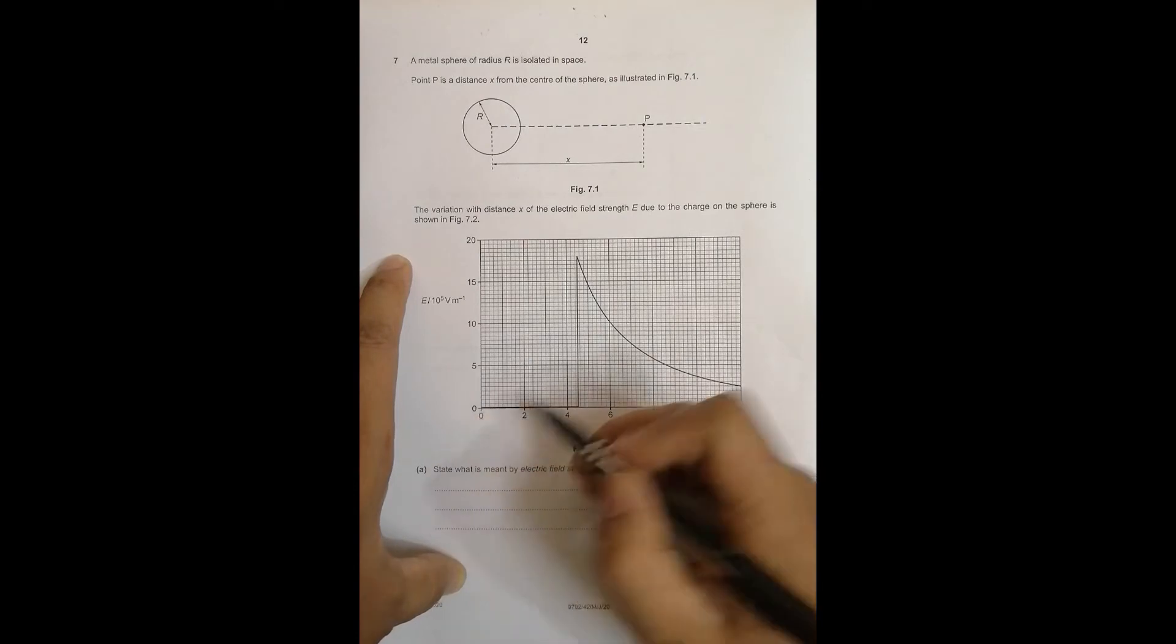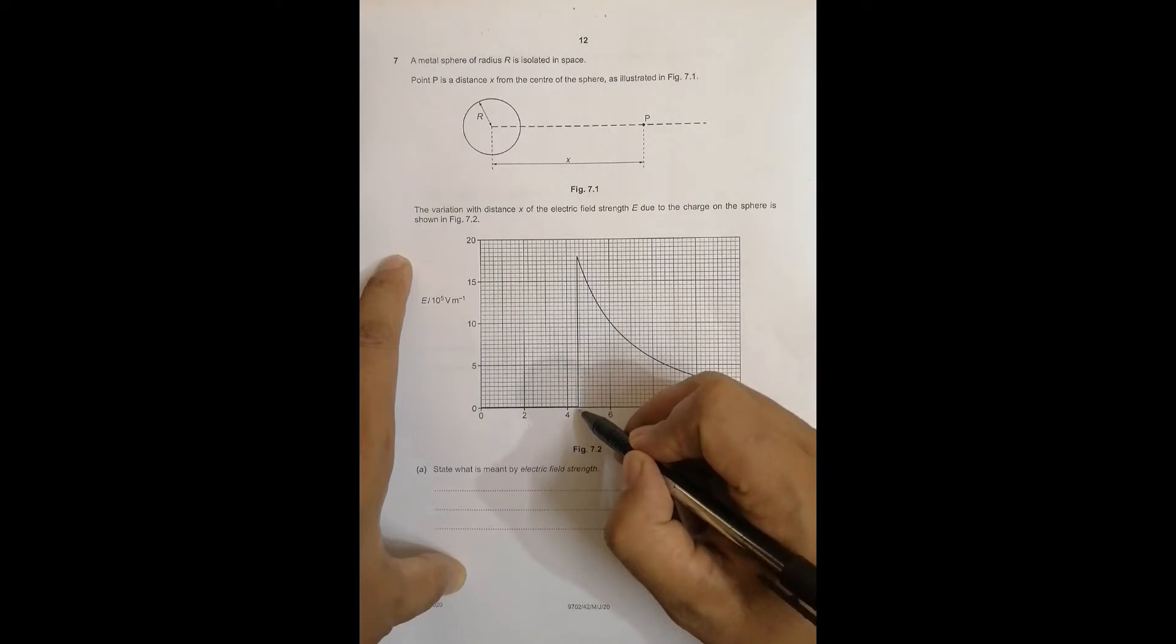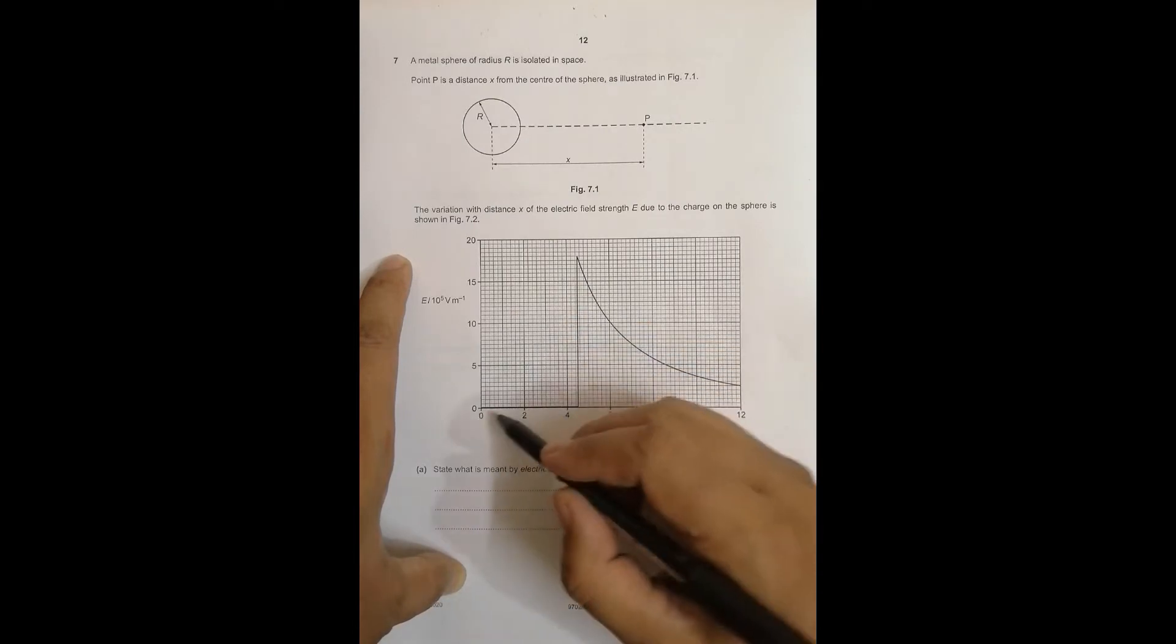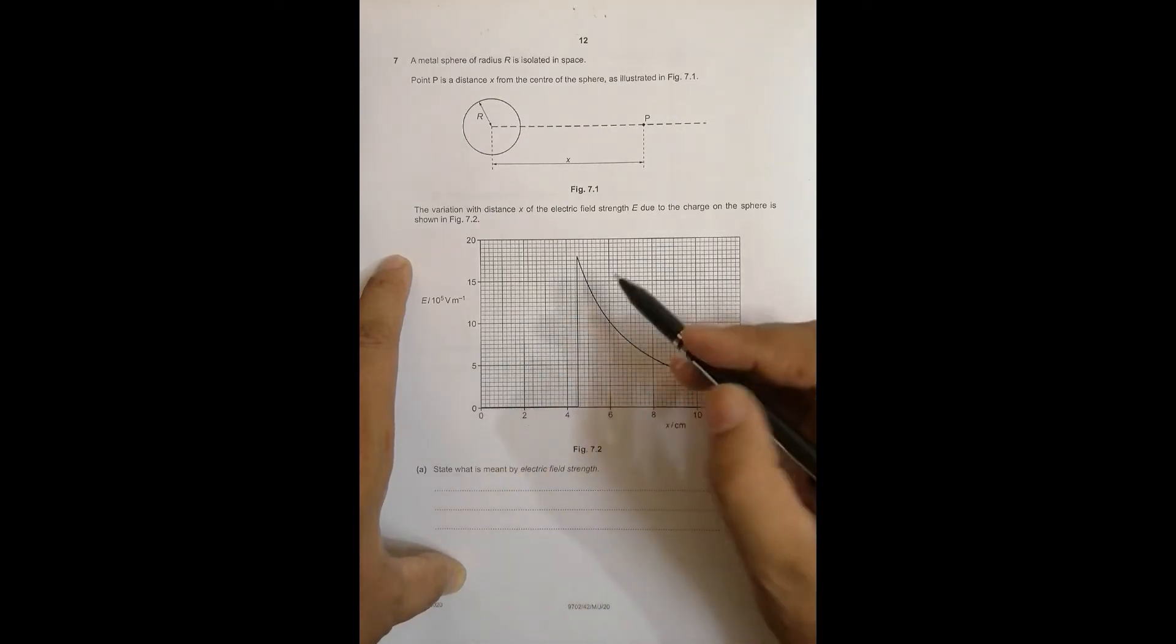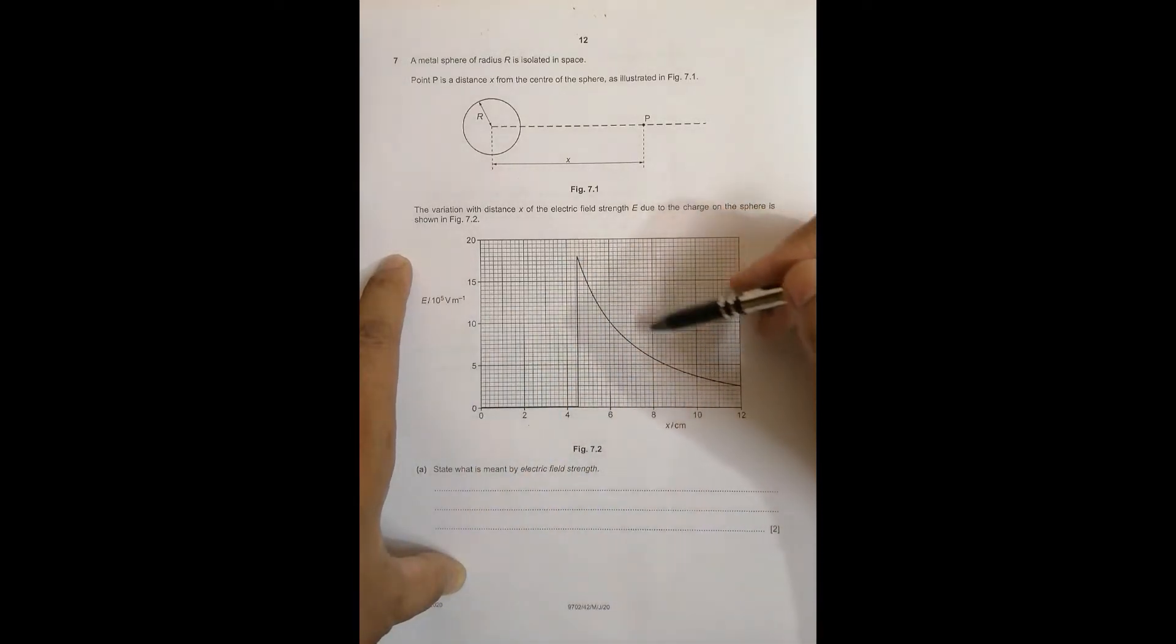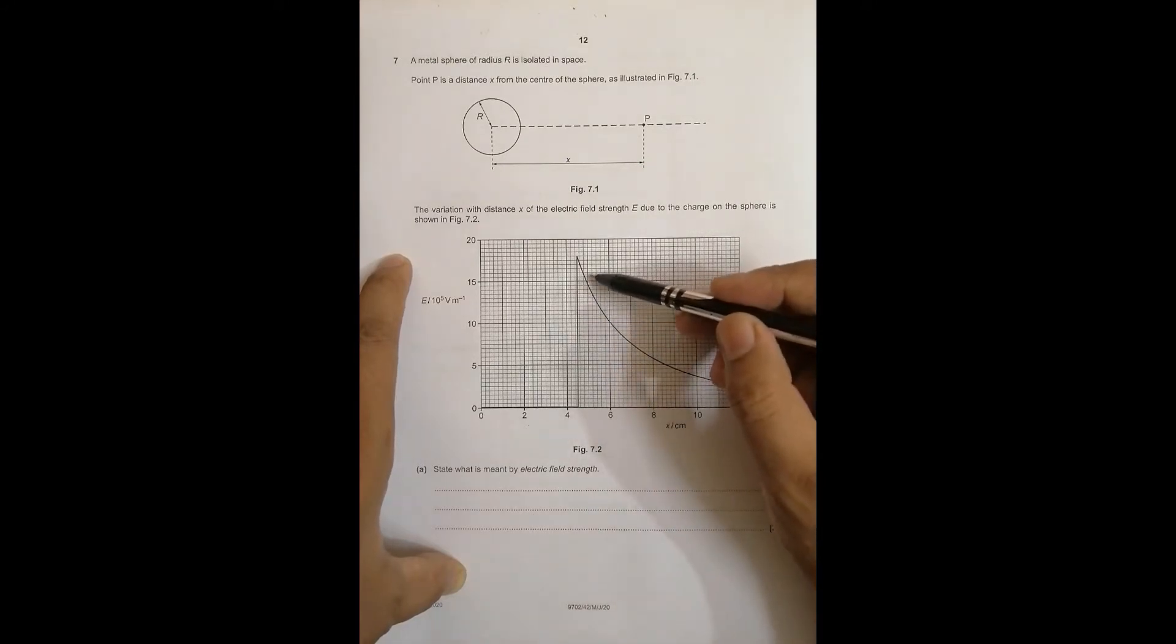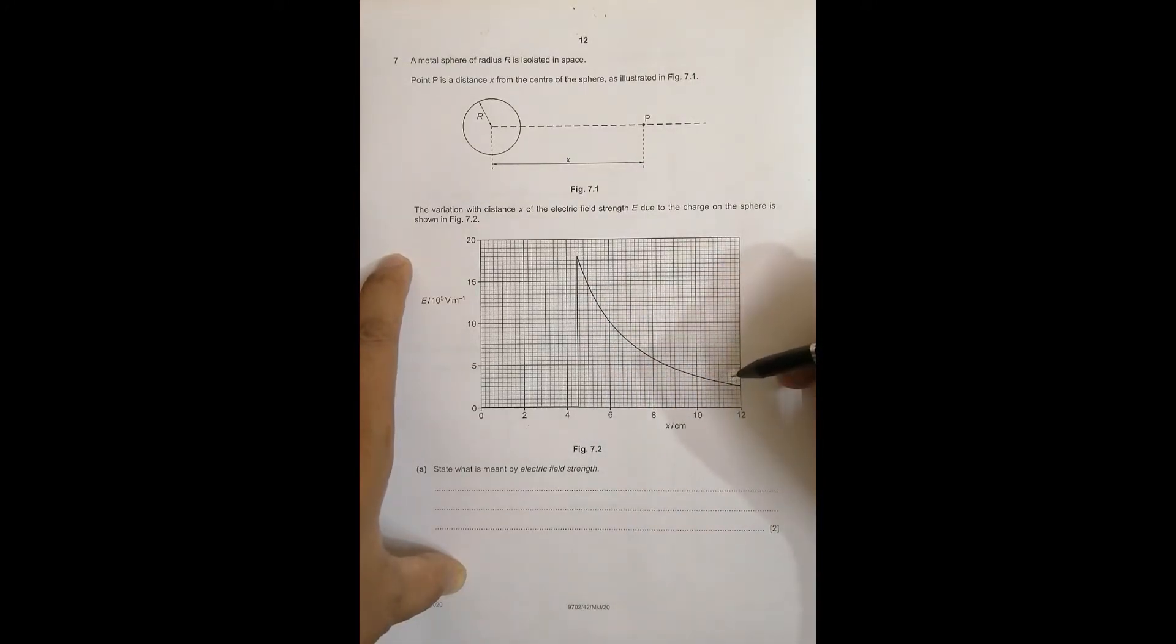From zero distance till about 4.5 centimeter the value is zero. Then at 4.5 cm it rises suddenly till 18 into 10 to power 5 volt per meter. Then it starts to decrease gradually and the rate of decrease is high in the beginning, later it decreases at slower rate.